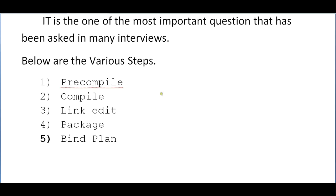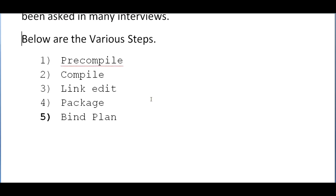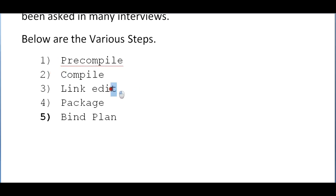There are basically five steps we need to go through in order to compile a COBOL DB2 program. The first one is pre-compilation, the next one is compile, then third is link edit, then package, and finally bind plan. These are the very important steps for a COBOL DB2 program. We will look into what each of these steps does exactly.